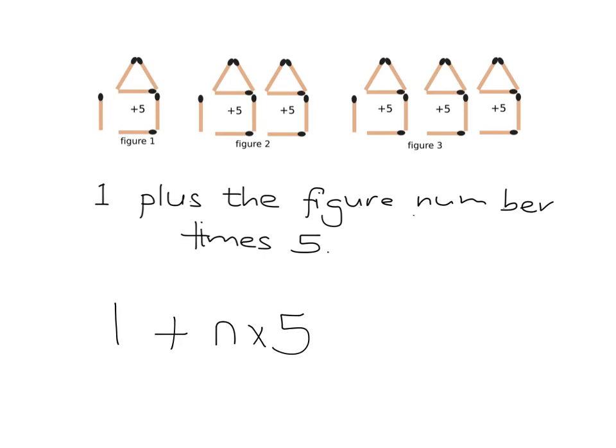And sometimes it helps to go back and think about for specific numbers. So we could think about like for the figure number 3, you'd go 1 and then you'd add on 3 lots of 5. And for figure number 10, then you'd go 1 plus 10 lots of 5. So figure number n, 1 plus n lots of 5. And now we want to write that nicely in our typical algebra way. n times 5, we know we write as 5n and we can just talk about it as 5n plus 1 or 1 plus 5n, whichever way we want to write it.